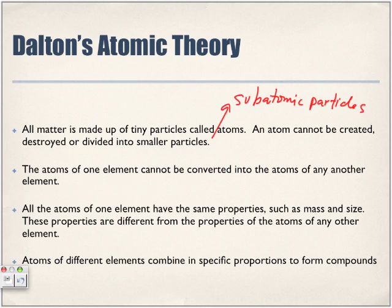All the atoms of one element have the same properties such as mass and size. These properties are different from the properties of the atoms of any other element. If we look at the mass number, notice how the mass number is different from element to element. None of them share the same mass number.